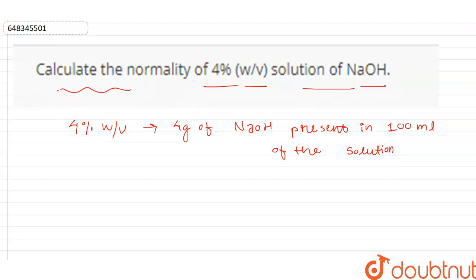And the formula of normality we all know is: normality equals weight of the solute divided by the gram equivalent weight of the solute, both for solute, multiplied by 1000 divided by the volume in ml.